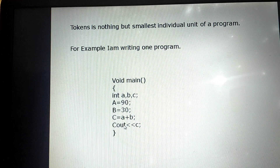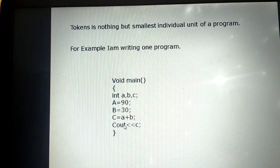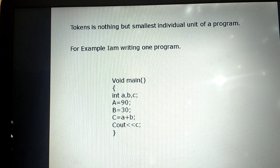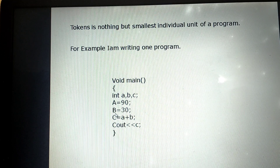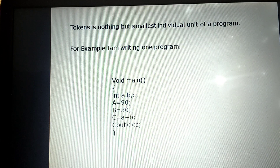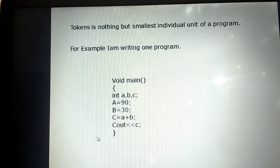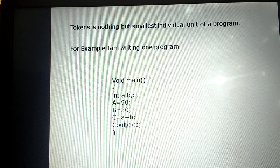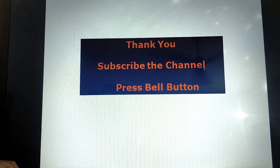Then cout — this is a keyword. All the smallest individual units we call tokens. Without using tokens, we cannot write the program. So tokens are very, very important in programming language.